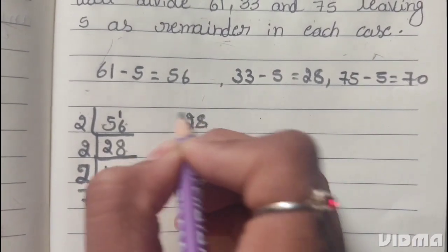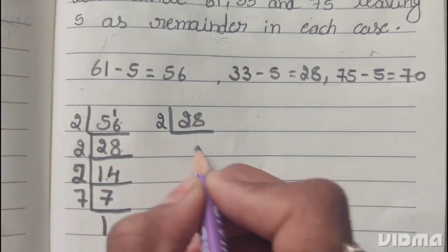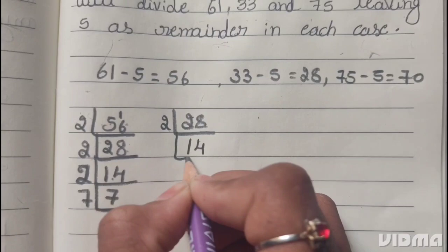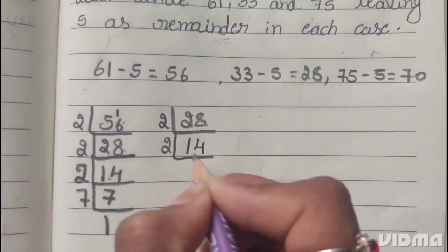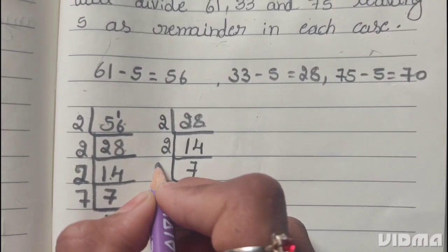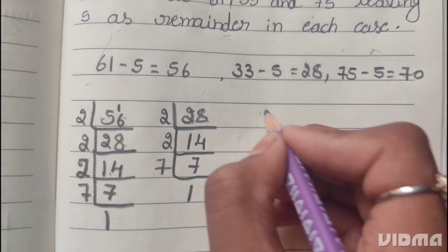Next, 28. 28 is divisible by 2, giving 14. 14 is divisible by 2, giving 7. 7 is prime number, it divides itself. So 28 = 2 × 2 × 7.